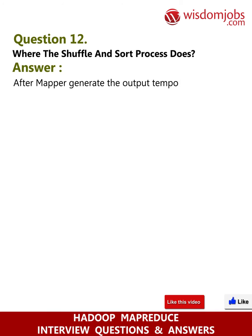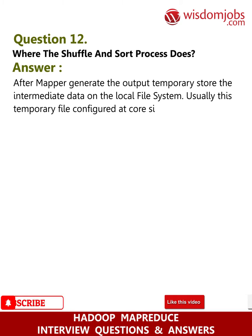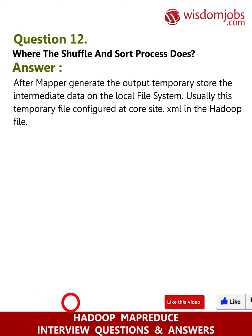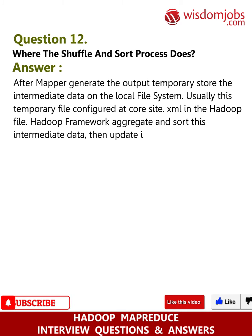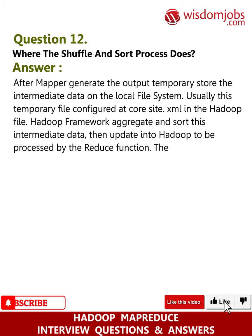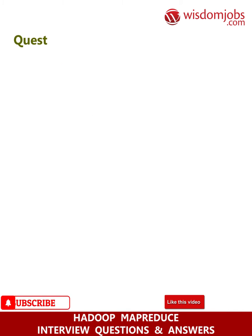Question 12: Where does the shuffle and sort process occur? Answer: After the mapper generates output, the intermediate data is temporarily stored on the local file system. This temporary file is usually configured in core-site.xml in Hadoop. The Hadoop framework aggregates and sorts this intermediate data, then updates it into Hadoop to be processed by the reduce function. The framework deletes this temporary data from the local system after the job completes.